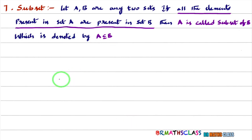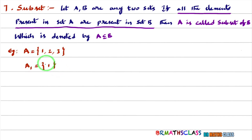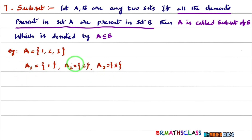We will try to understand this with an example. Consider set A = {1, 2, 3}. I will write all the subsets of A. Consider a set containing element 1 — all elements present in this set are present in A, so this set A1 is a subset of A. Similarly, observe set A2: all elements present in it are present in A, so it is also a subset of A. Likewise A3 is a subset of A.